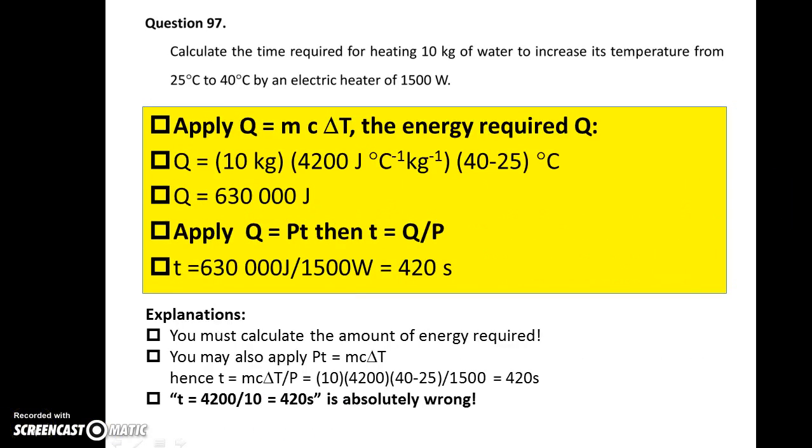Question 97. Calculate the time required for heating 10 kg of water to increase its temperature by 15 degrees Celsius using an electric heater. First of all, you have to find how much energy is needed by using the formula mc delta T again. Then use the formula Q equals Pt to find the time taken in order for the electric heater to produce that amount of energy.